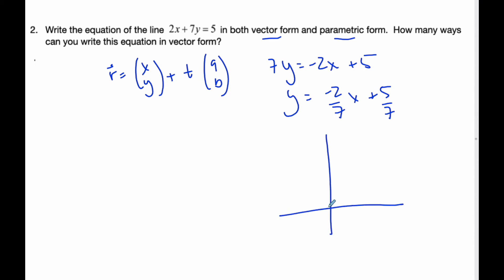And so if I think about this line, I know I have a y-intercept of 5 sevenths, right? And I go down 2 over 7. Something like this. So it goes down 2 over 7.